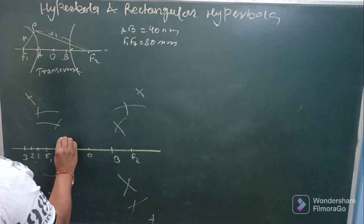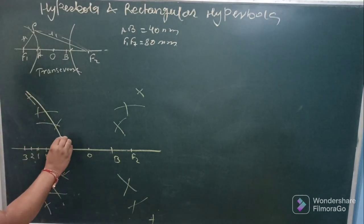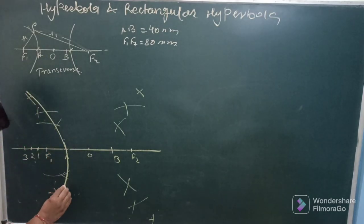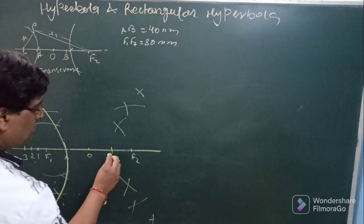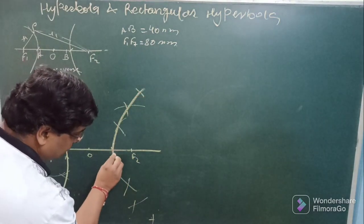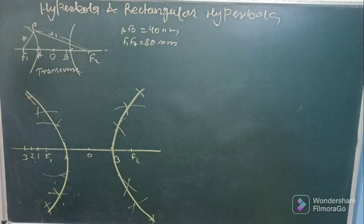When I join them passing from a you will be getting hyperbola like this.